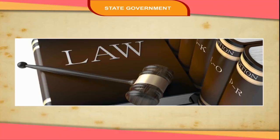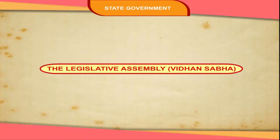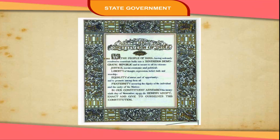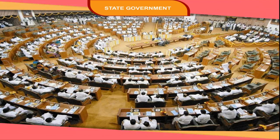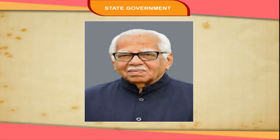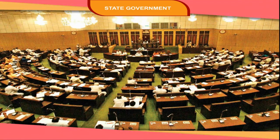The state legislature makes laws on the subjects mentioned in the state list and concurrent list. Our Constitution provides for a maximum of 500 members and a minimum of 60 members in a Legislative Assembly. The Governor of the state can nominate one member of the Anglo-Indian community if it has not been represented in the Legislative Assembly. The number of members in the Assembly is fixed by the Parliament in proportion to the population of the state concerned.